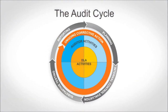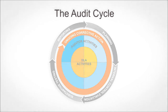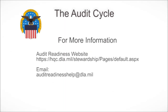The audit cycle is a continual process that will occur year after year. Corrective actions based on audit findings and recommendations should be taken in a timely manner to better prepare for the next audit cycle. This dedication to constant improvement will help DLA achieve its goal of process excellence and ultimately allow DLA to better serve America's warfighters. For answers to questions regarding the audit process and your organization's responsibilities, please visit the Audit Readiness website or send questions to AuditReadinessHelp@DLA.mil.